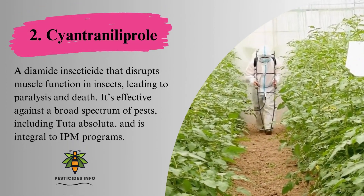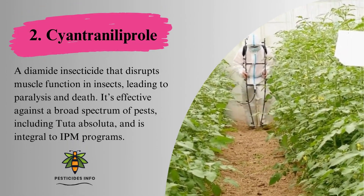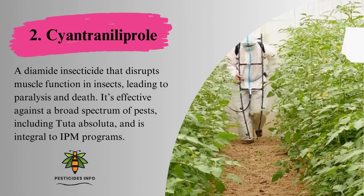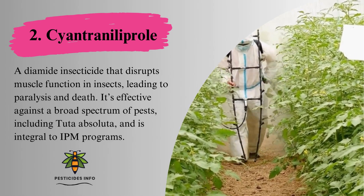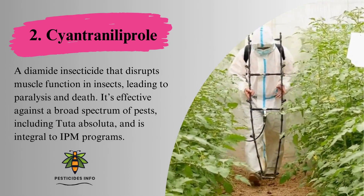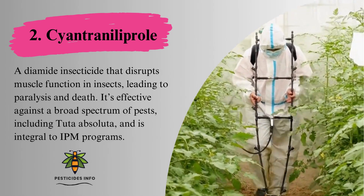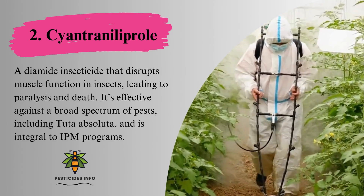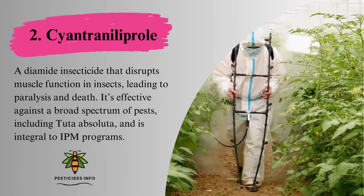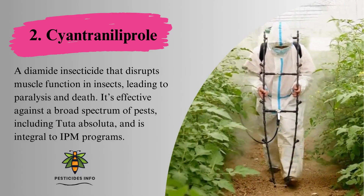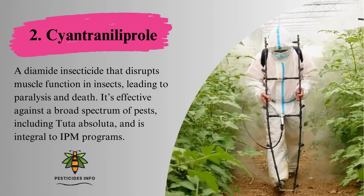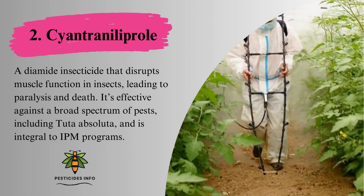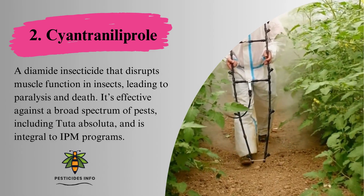2. Cyantraniliprole, a diamide insecticide that disrupts muscle function in insects, leading to paralysis and death. It's effective against a broad spectrum of pests, including Tuta absoluta, and is integral to IPM programs.